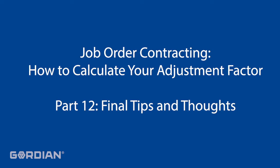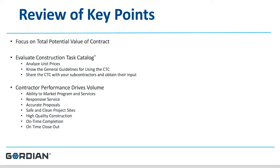As you respond to the owner's solicitation and calculate your adjustment factor, here are some key points. Focus on the potential value of the contract: what has the owner said in their solicitation? How much can you do on a yearly basis — one million, two million, three million, four? That value becomes very important when you go to calculate your adjustment factor.